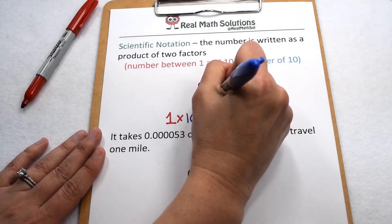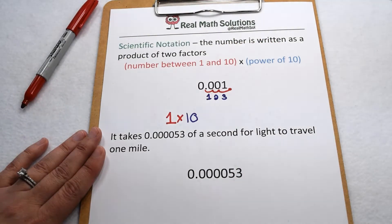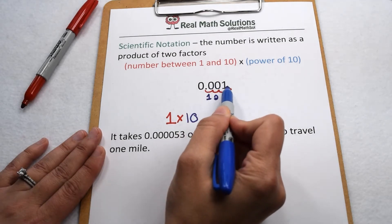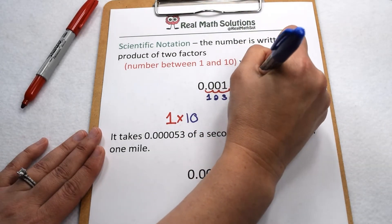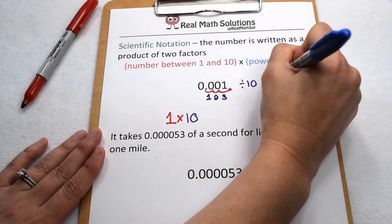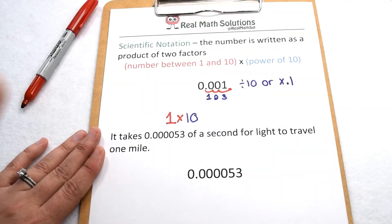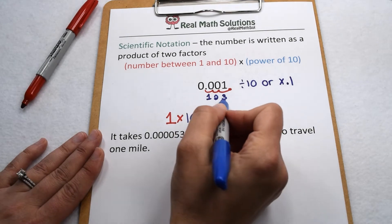We can see we moved our decimal 1, 2, 3 places, but here we're working behind the decimal. So each of these represents dividing by 10 or multiplying by the decimal 1 tenth. So we need to show that in our exponent.